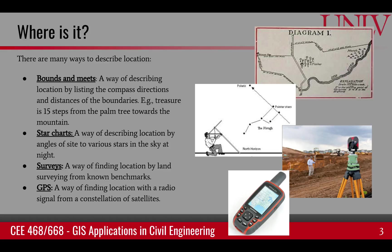For example, if I told you that the treasure map is 15 steps from the palm tree towards the mountain — that's one way of describing position or location. Then star charts were also used, where the angles made with stars were used to calculate locations on the surface of the earth. And during the day, the sun would be used as one of the stars for determining location.